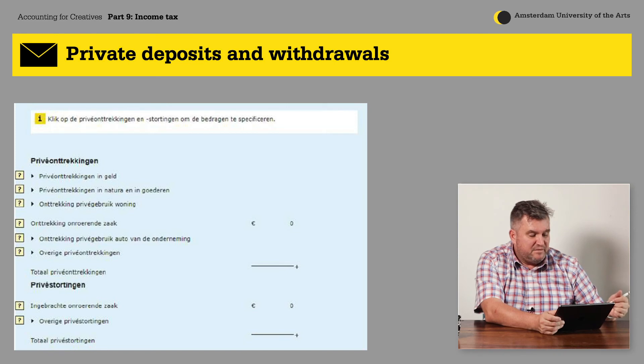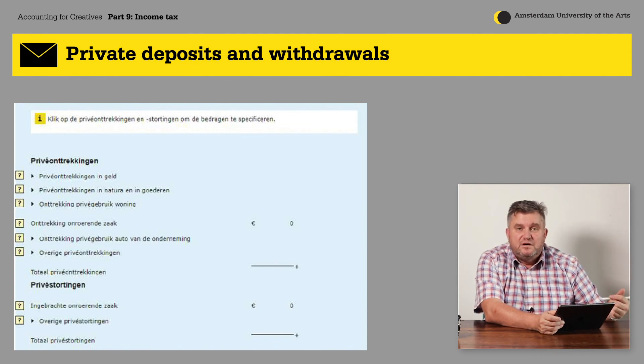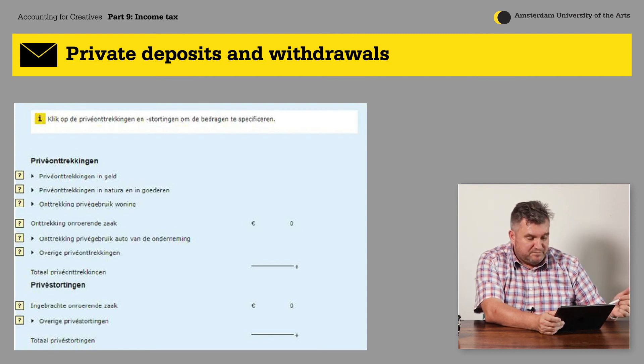Private deposits and private withdrawals are asked separately on this income tax declaration. You have to tell them how much money you took out of your business and how much money you put into your business — this can be money or goods, and you have to mention the value of those goods here. These are asked separately, so you should keep them separately in your bookkeeping too, which makes it easier at the end of the year.